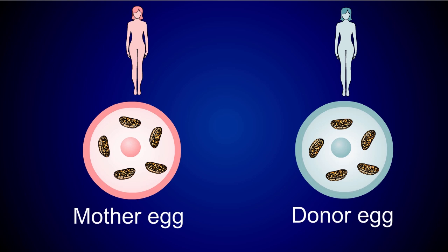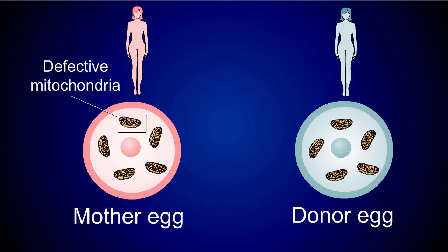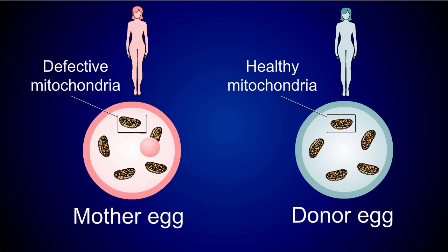The process involves exchanging an egg cell that contains defects in mitochondrial genes with a cell from a donor that does not contain those defective genes. Once the donor egg cell is secured, it's then a matter of introducing the genetic material from the mother and the father. There are two similar, yet slightly different methods for this.